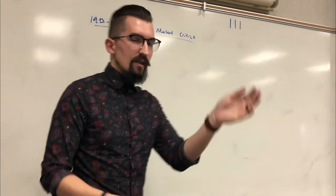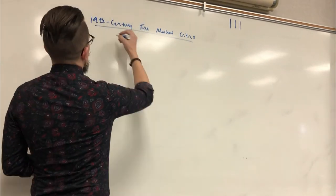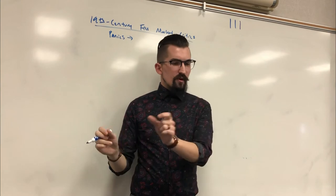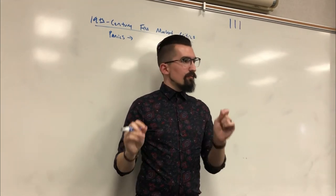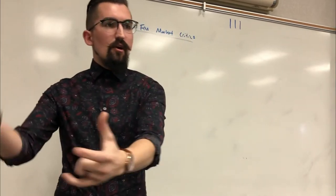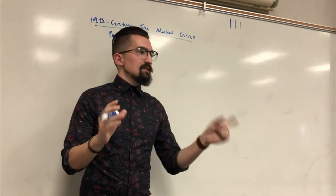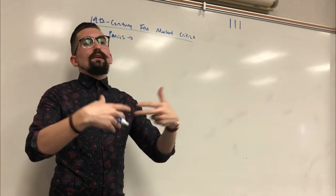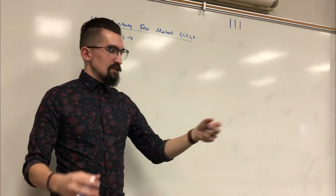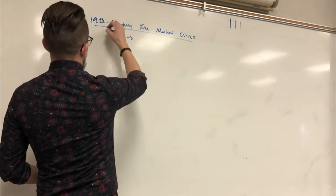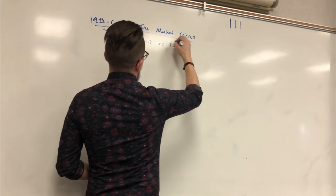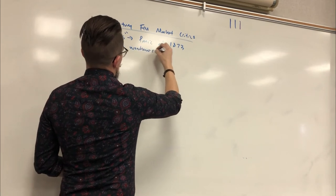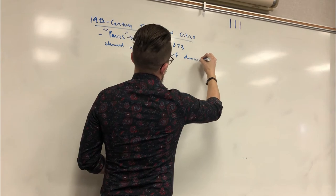Panics occur when fear — from a minor stock issue or a bank failure — causes people to rush and withdraw their gold, silver, or money. Since banks never hold enough funds to pay everyone simultaneously, this triggers banking system failure, reduced loans, layoffs, and a nasty economic cycle. The Panic of 1873 demonstrated the weakness of laissez-faire during down cycles.